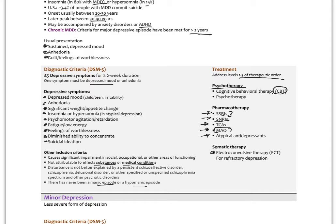Somatic therapy — specifically electroconvulsive therapy (ECT) — is an end-stage treatment where the patient is anesthetized and given electrical shocks to the brain. We don't fully understand how it works, but it's almost like throwing a reset switch, resynchronizing misfiring groups of neurons. Modern ECT has a fairly high success rate and is reserved for refractory depression. The criteria for MDD is five or more symptoms for more than two weeks; if it continues beyond two years it's labeled chronic MDD.